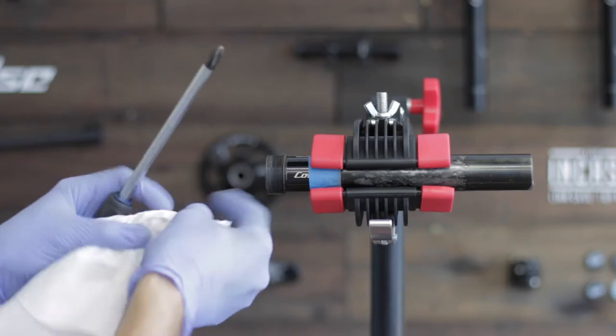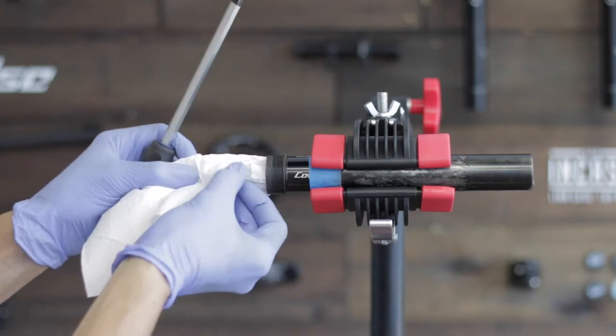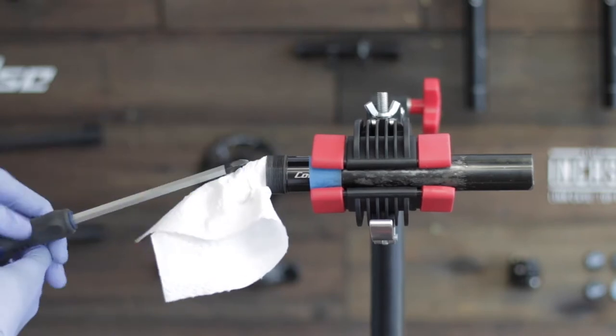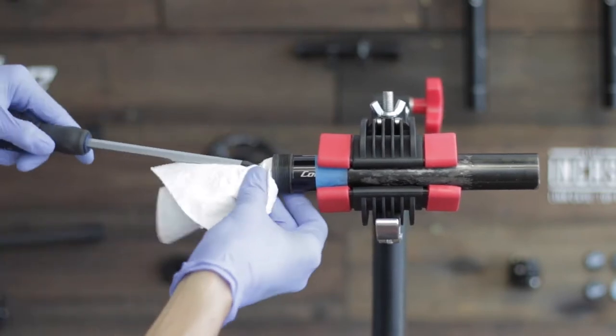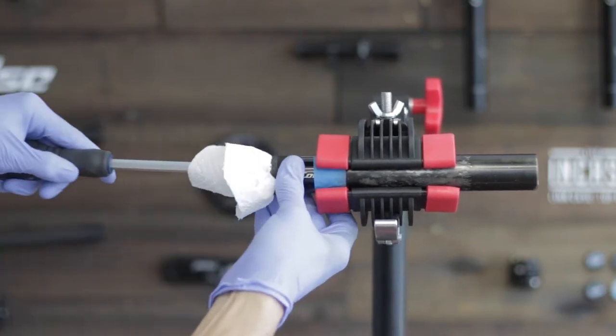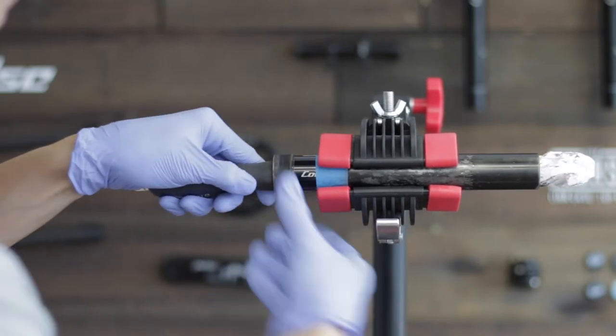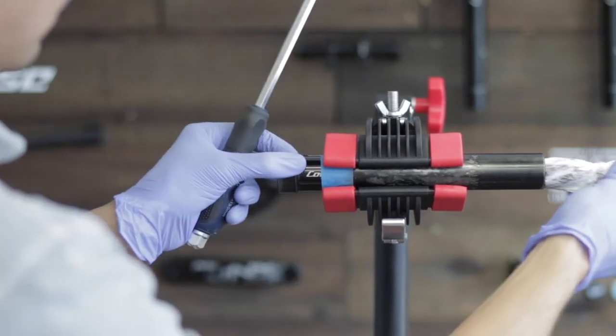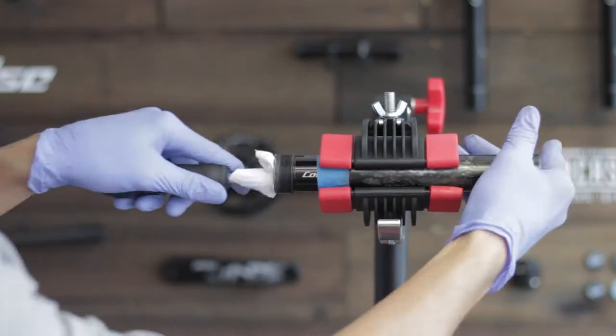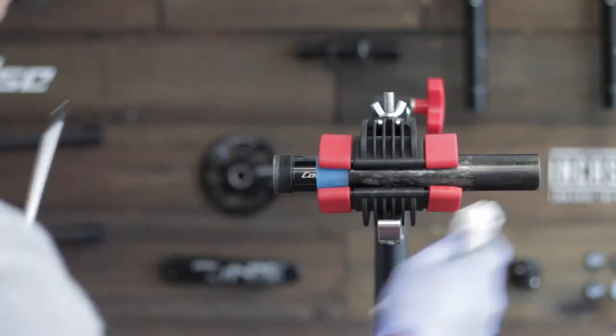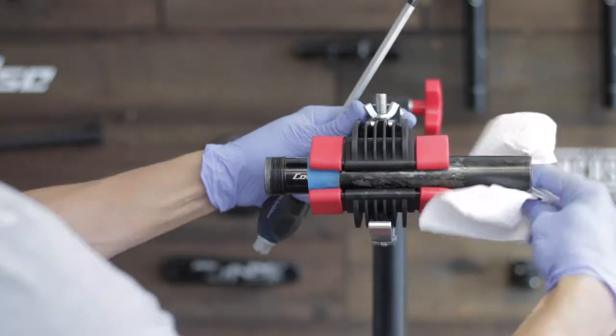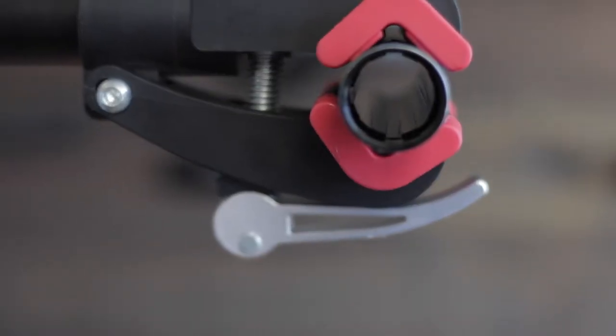It's now time to clean the lower tube. Bunch up some paper towel and push it through using a long screwdriver. You'll want to repeat this process a couple times until it's completely clean. Have a look inside the tube and make sure it's completely clean inside.